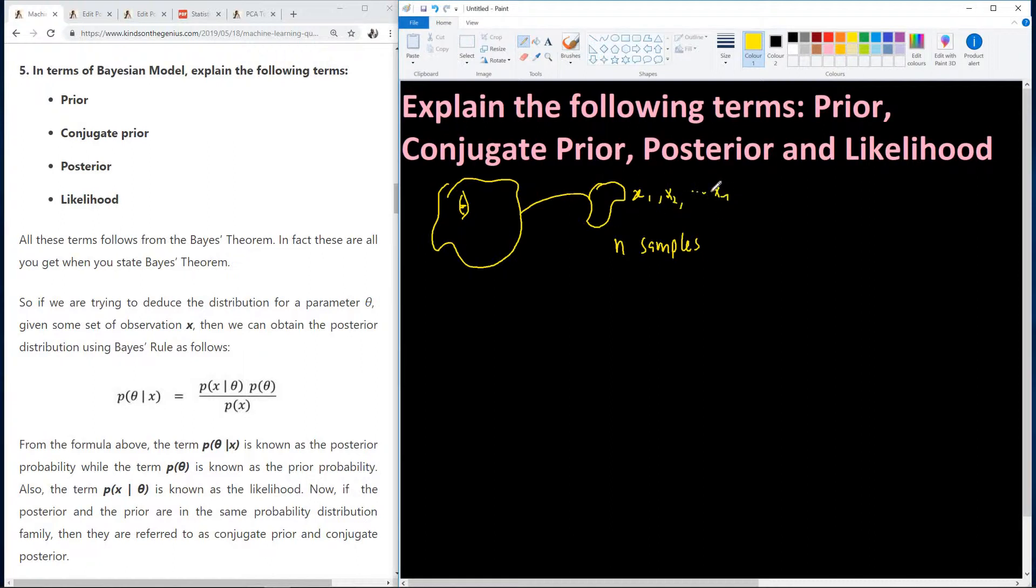So you've taken out these samples, and you want to deduce a parameter of the distribution. Basically, you are trying to deduce an unknown parameter. So you can find this parameter using Bayes' rule.